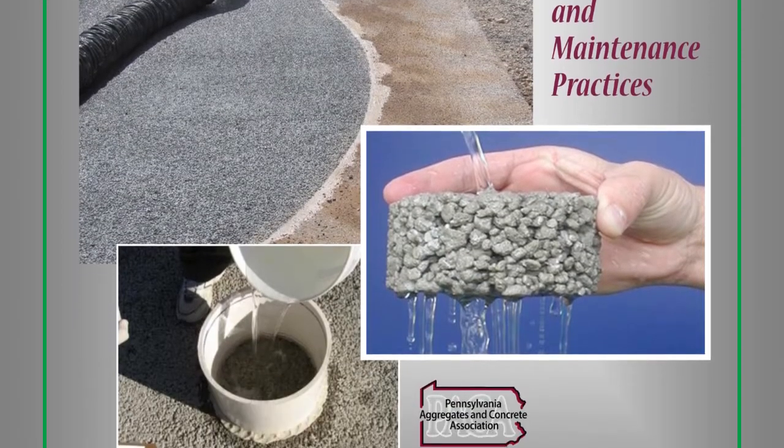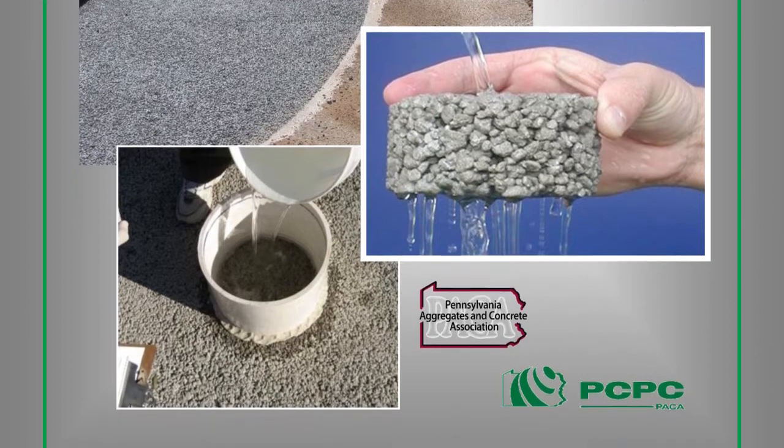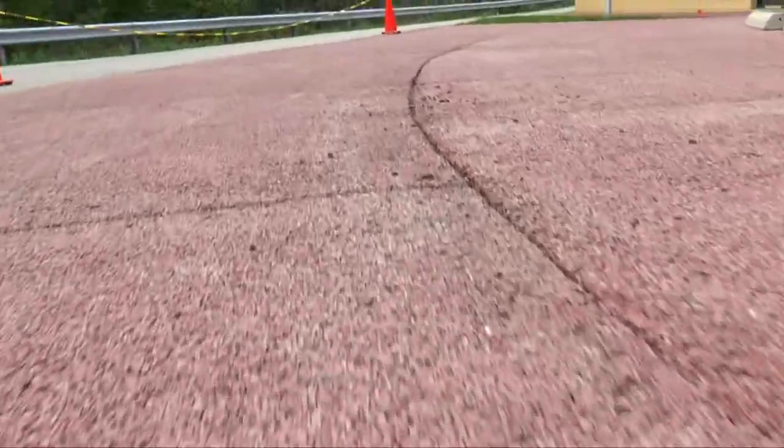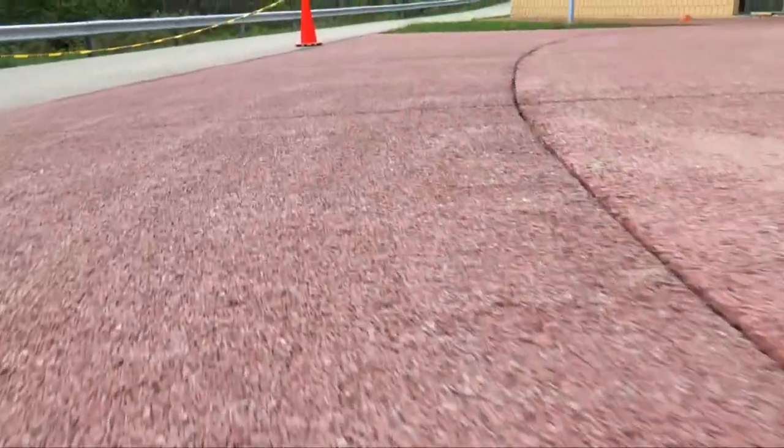Pervious concrete pavement is a rigid, permeable pavement that is the surface of a stormwater management system. The pervious concrete surface layer is a horizontal plane that is permeable to water and air.